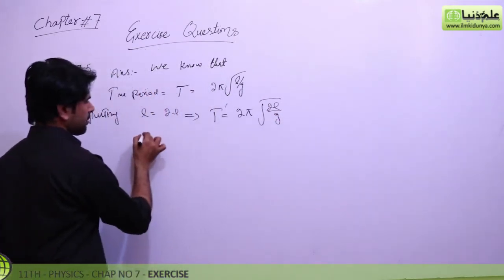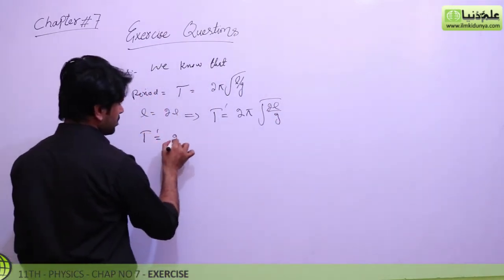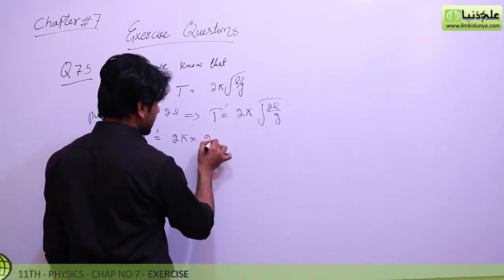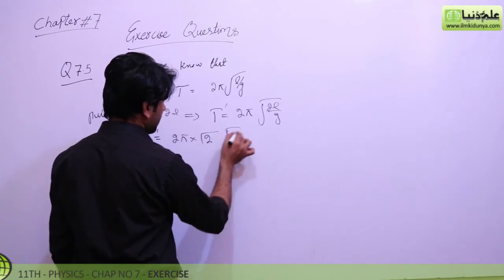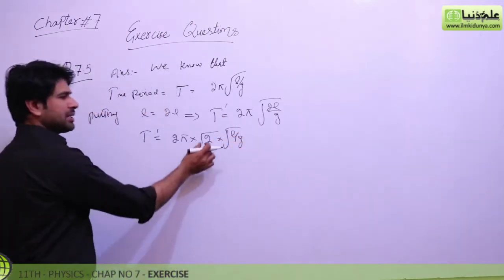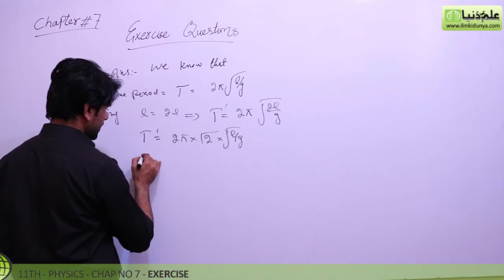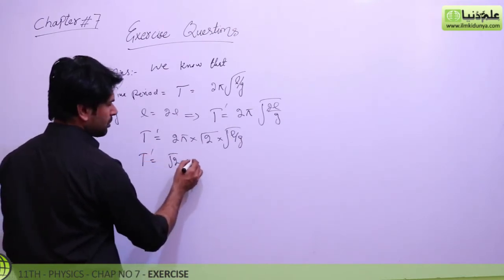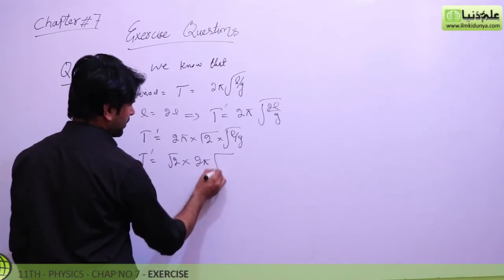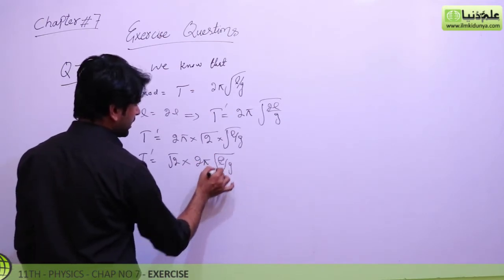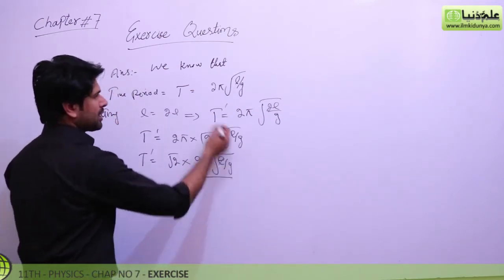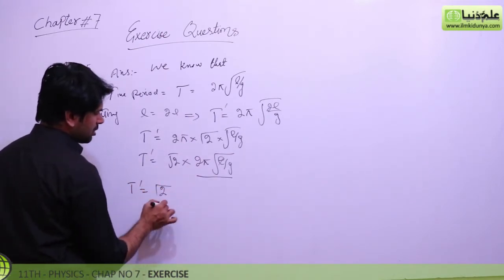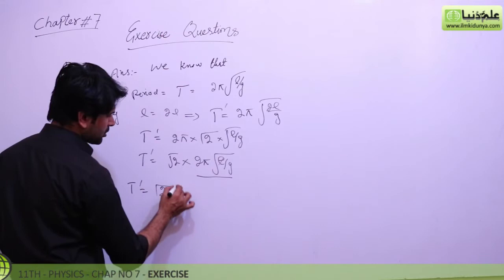We separate this: 2π, and the factor of root 2 is written separately, leaving l/g inside. So T' = √2 × 2π√(l/g). We can see that 2π√(l/g) is our original formula for T, so T' = √2 × T.